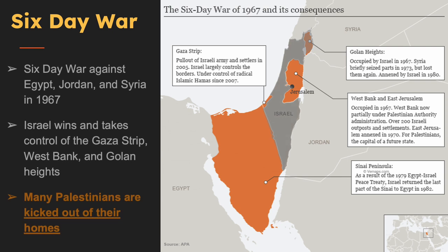Six-Day War: In the Six-Day War against Egypt, Jordan, and Syria in 1967, Israel won and took control of the Gaza Strip, the West Bank, and the Golan Heights. Many Palestinians were kicked out of their homes.